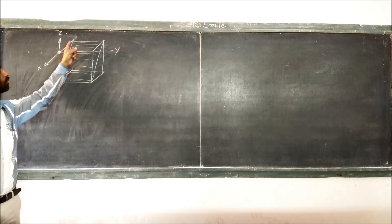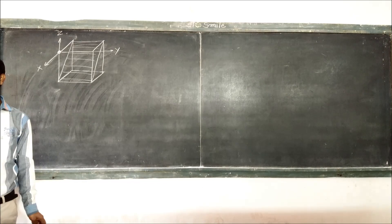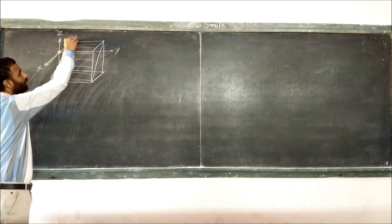This is the origin. Now, what is the base indices and Miller indices? So, this is the plane.